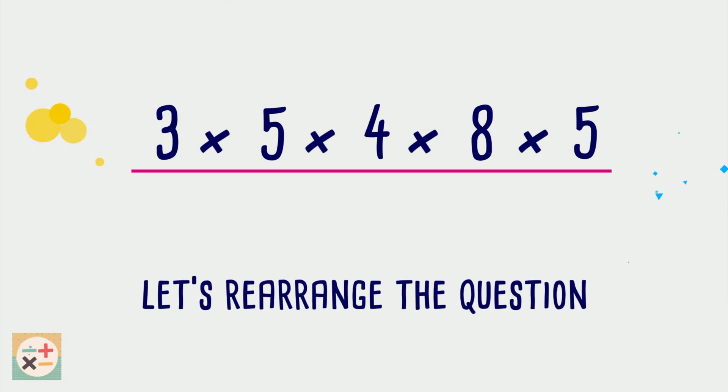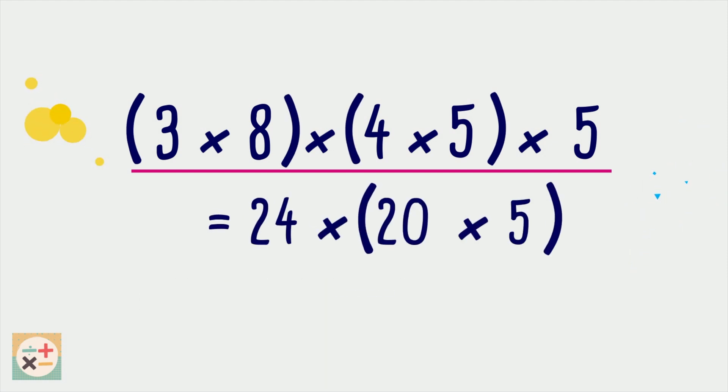Here we can multiply some of the numbers together to make 100. We can then easily multiply 24 by 100.